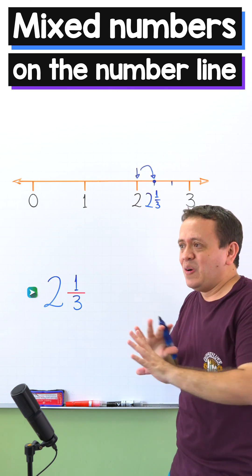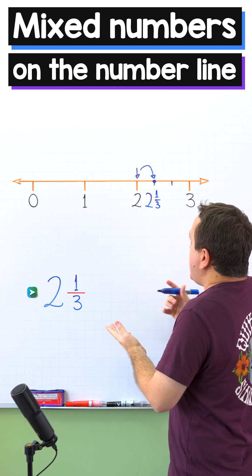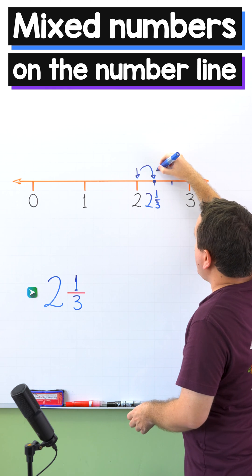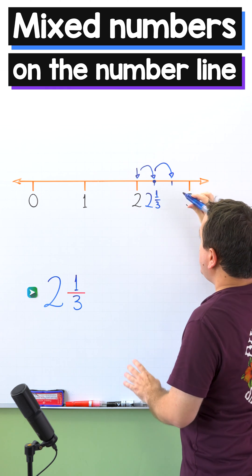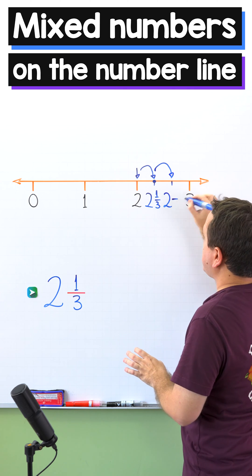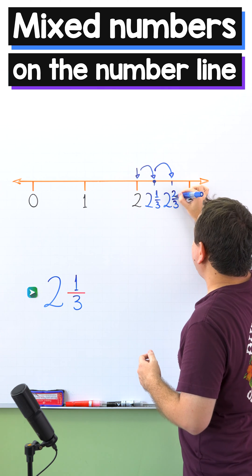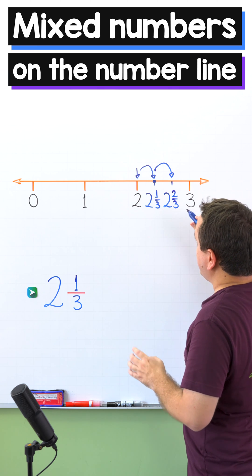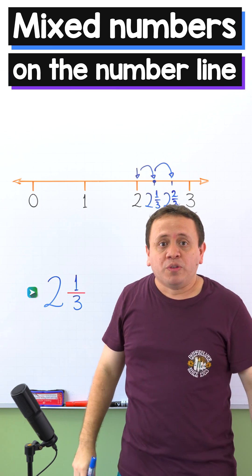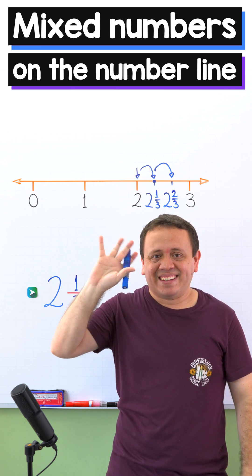Now, what would happen if starting from two we move to the right two parts? We have started from two, we divided this segment into three equal parts, and finally we move to the right two parts. Therefore, this is the location of the mixed number two and two-thirds. And we are done with this video. If you want to learn more about mixed numbers, check out this playlist. Have a good day and see you next time, bye!